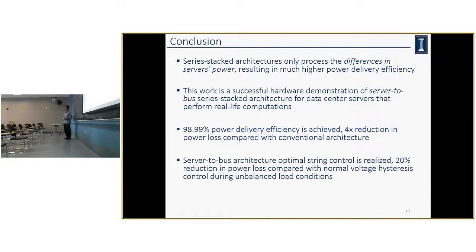Second question: how does the voltage hysteresis control decide the string current? In that control algorithm, we sample the server currents and compare the four values in the microcontroller to decide which server consumes the second largest current. However, the voltage hysteresis control does not actively control the string current, so you cannot guarantee it will be the optimal value. When the string current happens to settle near the optimal, the performance will be similar to the optimal string current control.